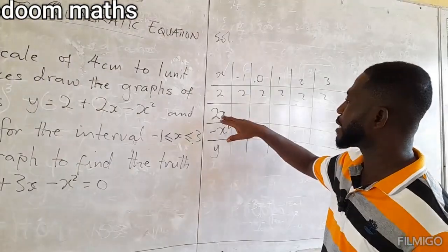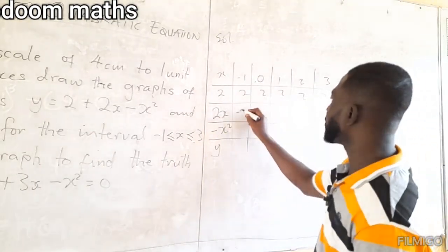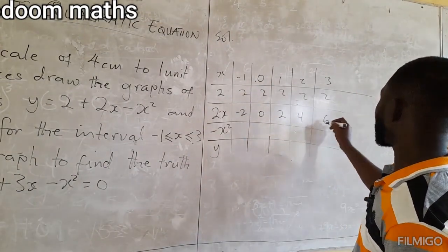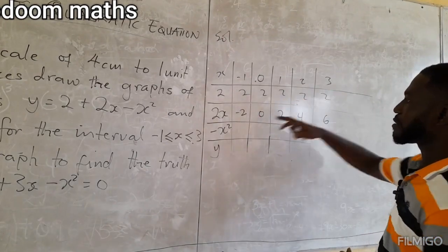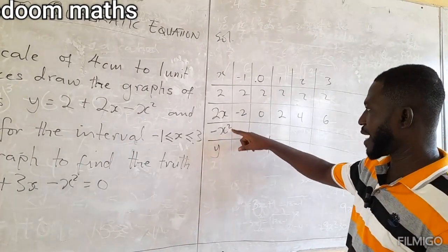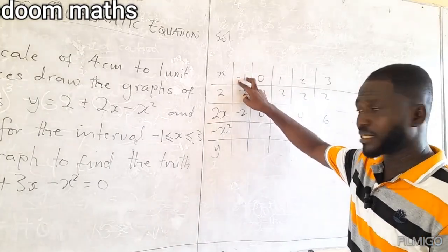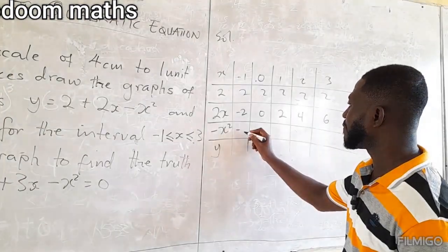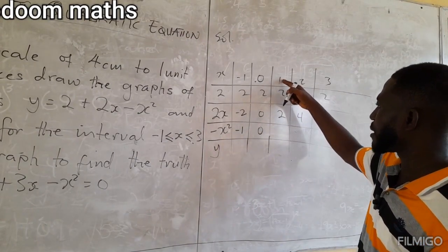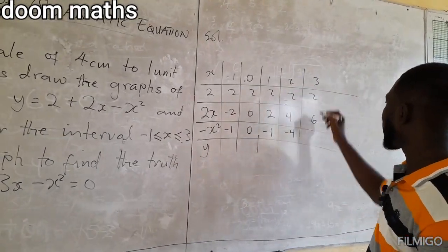We take x and multiply by 2: negative 1 times 2 becomes negative 2, 0 times 2 becomes 0, then 2, 4, and 6. Then we square x and negate it: negative 1 squared gives 1, negated gives negative 1. Continuing: negative 1, negative 4, then negative 9.